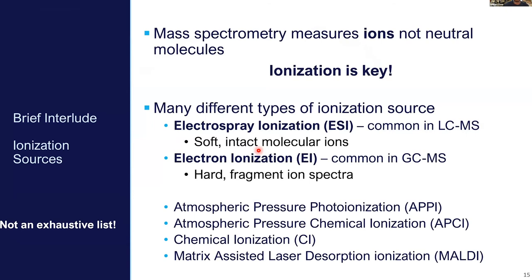A little interlude about ionization sources: in mass spec, we measure ions, not neutral molecules, so the ionization source is key. Generally in LC-MS we use electrospray ionization — soft ionization that gives you intact molecular ions. In GC-MS we use electron ionization, which is hard and gives fragmentation ion spectra. Additionally, we have the retention time — the time at which your feature is detected after elution from the chromatographic column. This should be fairly reproducible, but it might not be depending on your instrument conditions.